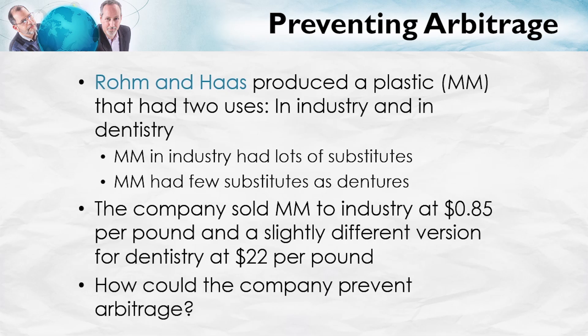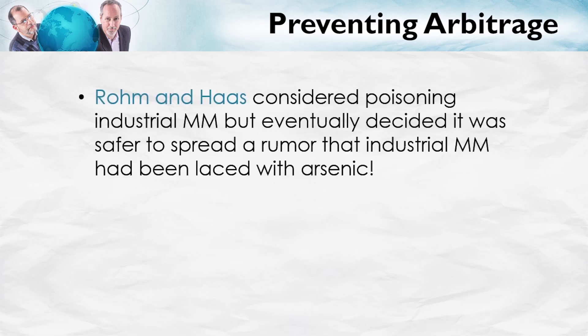How could the company prevent this kind of arbitrage? Amazingly, Rohm and Haas considered poisoning industrial MM so no one would want to use it for dentures. Eventually they decided it was safer to simply spread a rumor that industrial MM had been laced with arsenic. The government actually does require some goods to be poisoned to prevent arbitrage — ethanol, for instance, can be used in cars as fuel and also for alcoholic beverages. The government subsidizes fuel ethanol but requires it be poisoned so it can't be converted into alcohol. The lesson is that it's easier to prevent arbitrage in some goods than in others — easier in services than in goods.